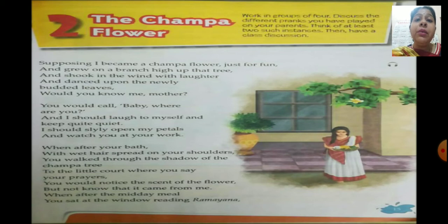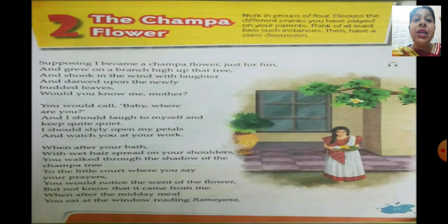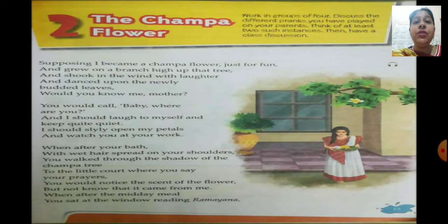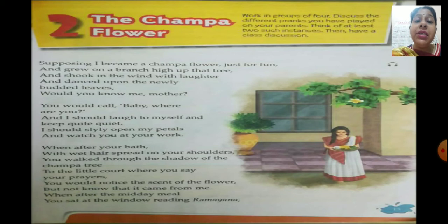I am reading the poem: 'Supposing I become a Champa Flower just for fun, and grew on a branch high up that tree, and shook in the wind with laughter and danced upon the newly budded leaves. Would you know me, mother?' Budding means growing — the new leaves have just come up.